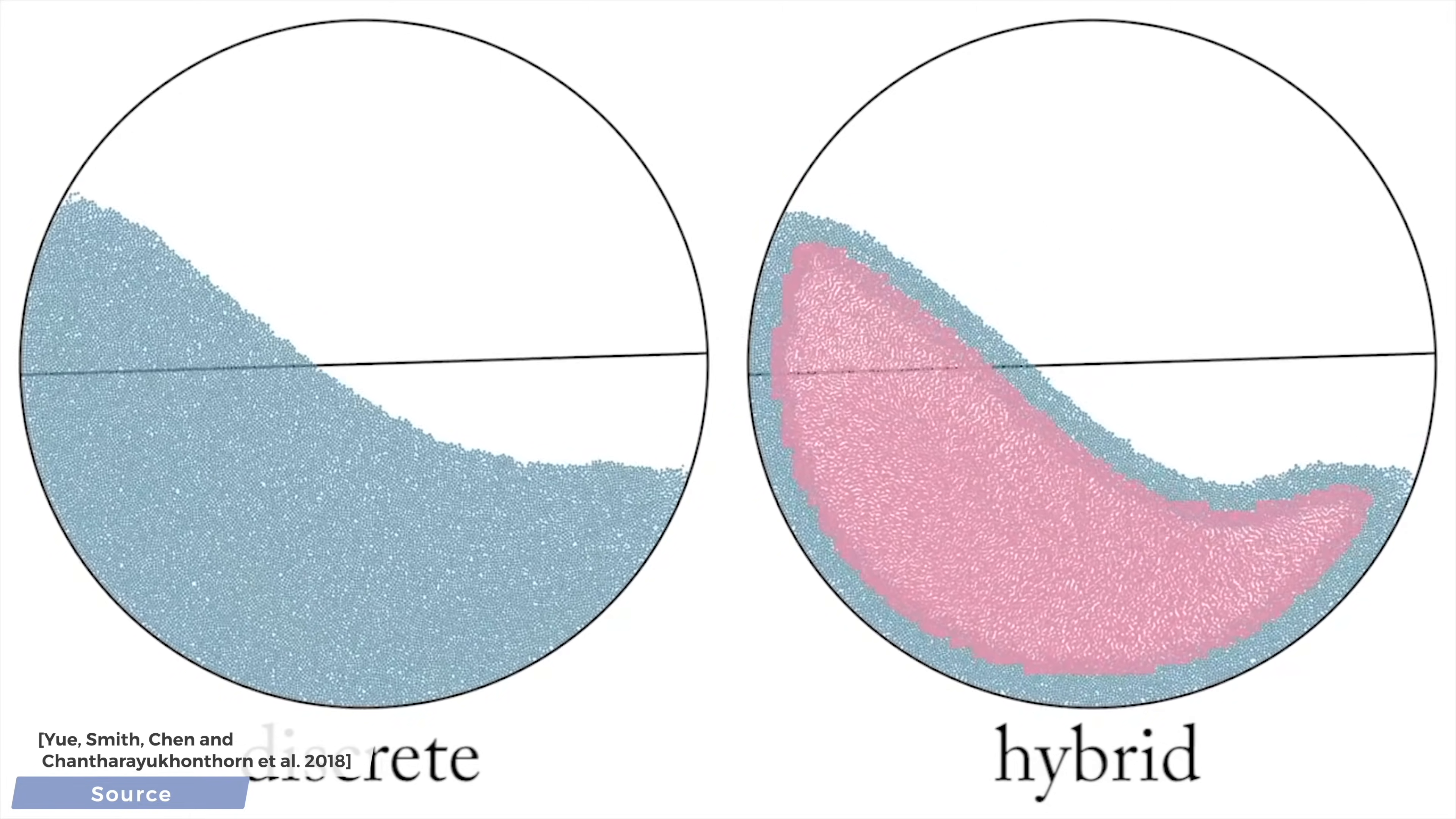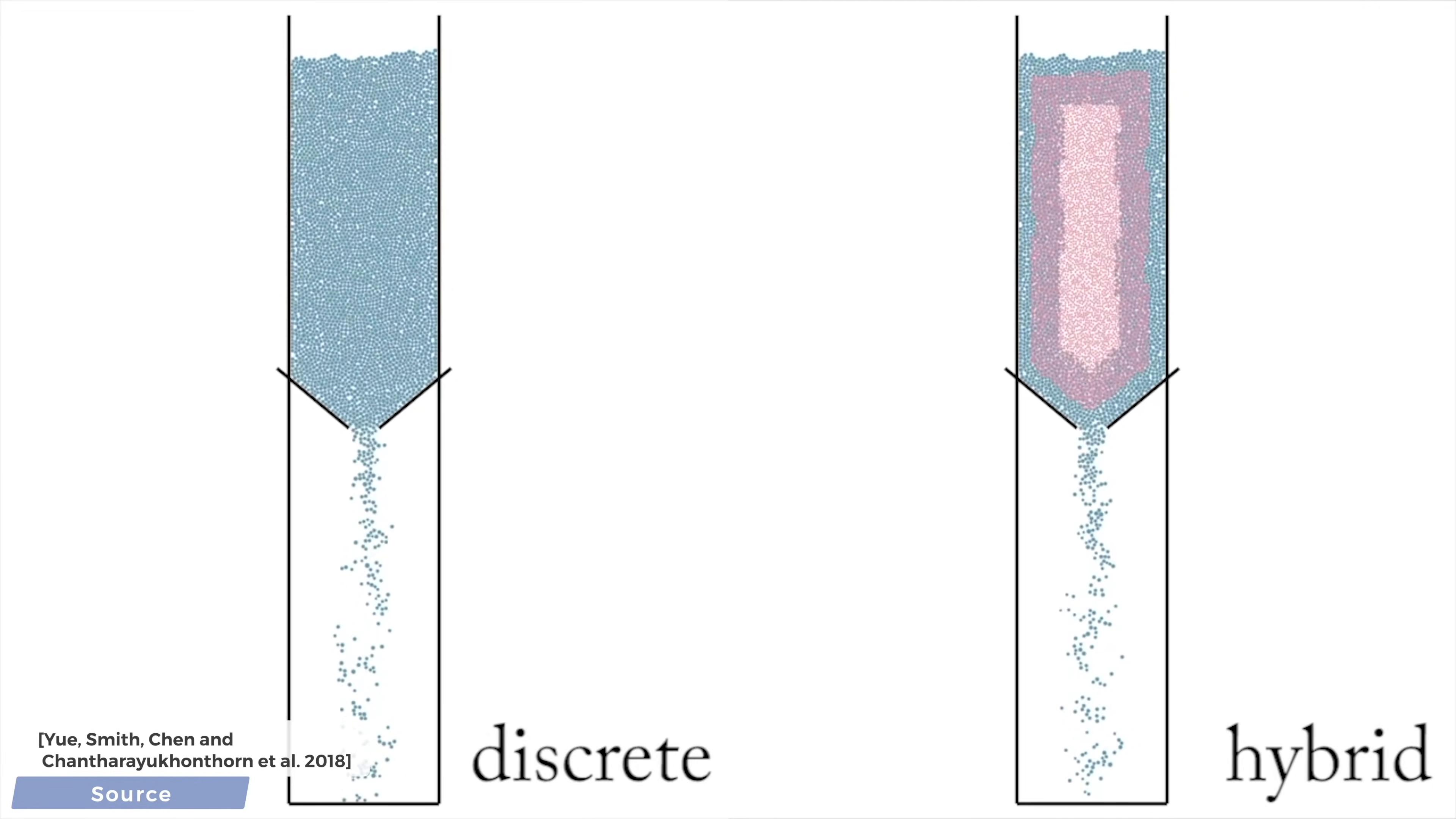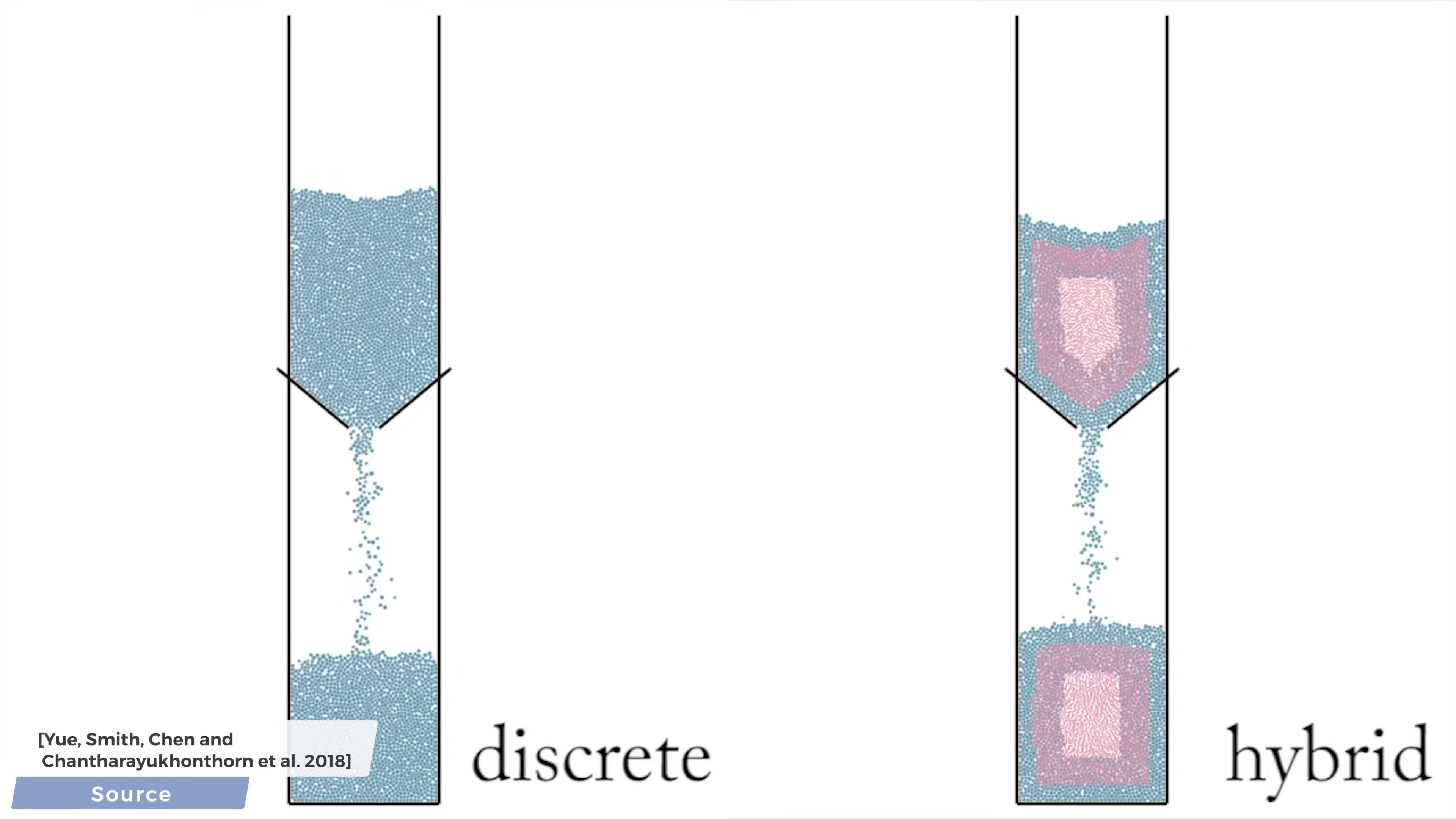Throughout the video, you will see the continuum zones denoted with red, and the discrete zones with blue, which are typically on the outside regions. The ratio of these zones gives us an idea of how much speedup we could get compared to a purely discrete simulation.